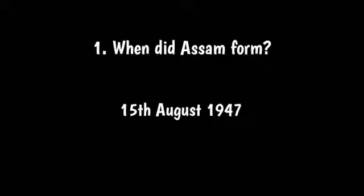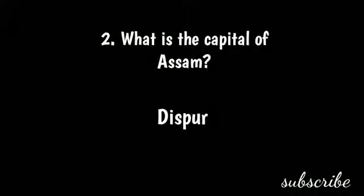Question 1: When did Assam form? Answer: 15th August 1947. Question 2: What is the capital of Assam? Answer: Dispur.